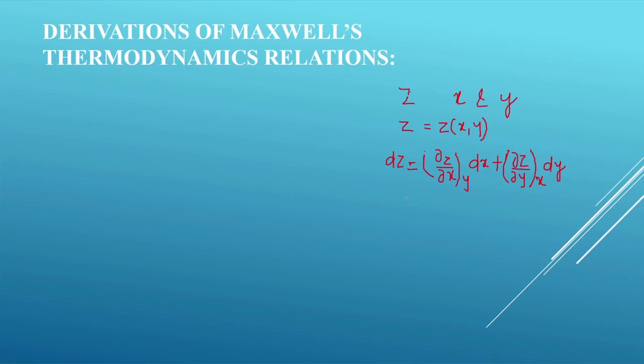To obtain Maxwell's relations using thermodynamic free energies, we can choose any one of the free energies as a function of any two thermodynamic variables out of the variables p, v, s, and T. So let us start the derivation of Maxwell's thermodynamic relations.